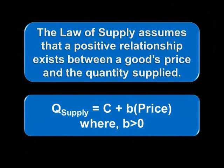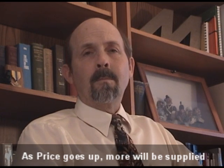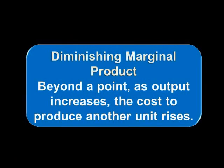Using the same ceteris paribus assumption, the law of supply assumes that a positive relationship exists between a good's price and the quantity supplied — as the price goes up, more will be supplied. All businesses face short-run constraints that limit their ability to increase output, meaning that producing greater quantities beyond a point leads to rising per unit costs. Since businesses only exist to earn a profit, they will only increase production if the price goes up enough to compensate for the rising costs. This is diminishing marginal product — as production increases, further increases become more expensive.